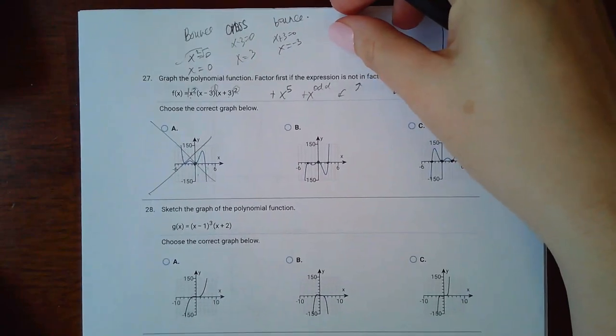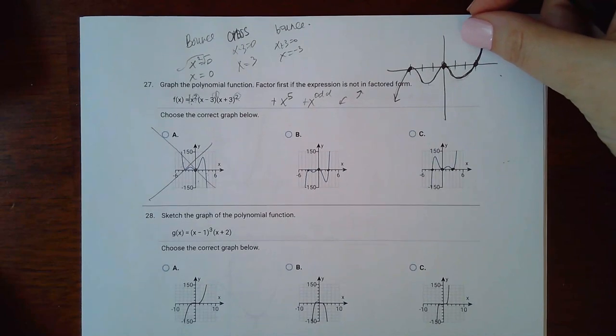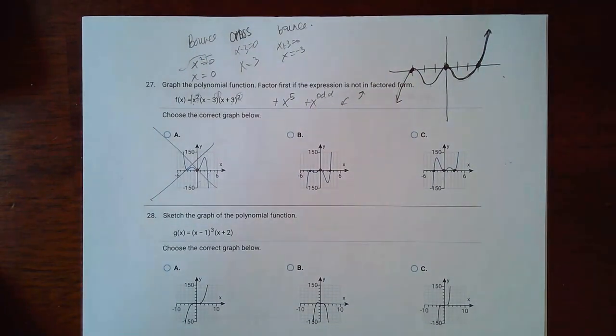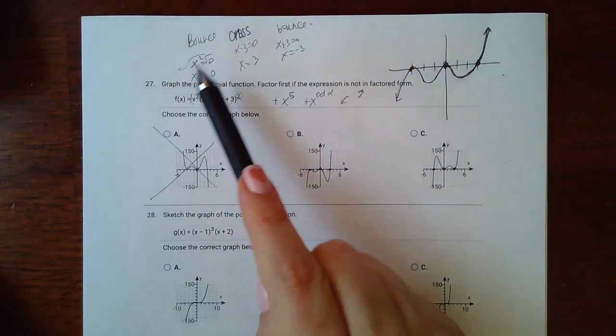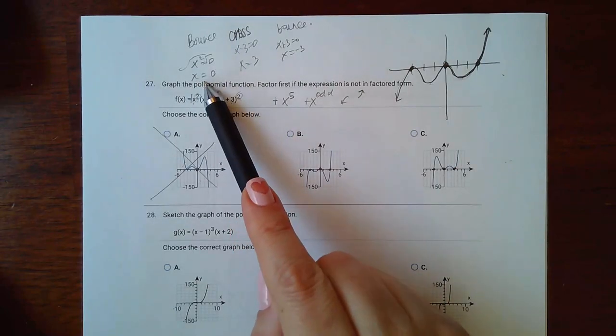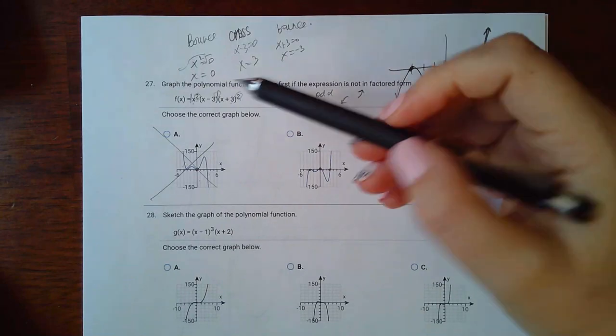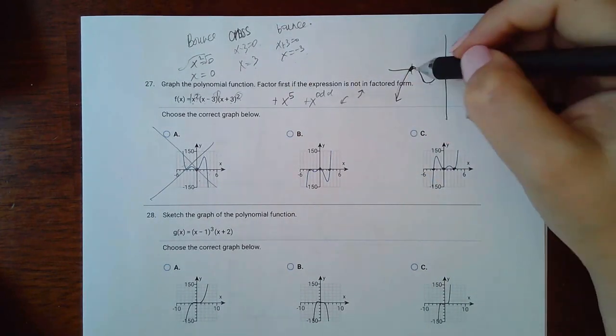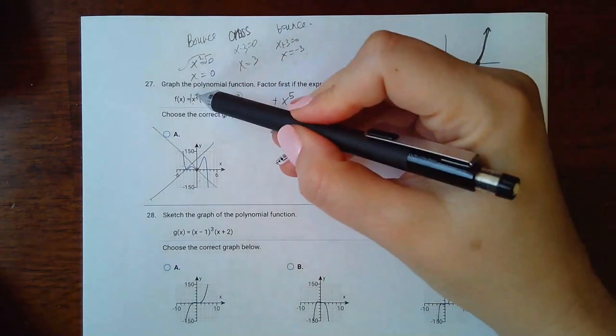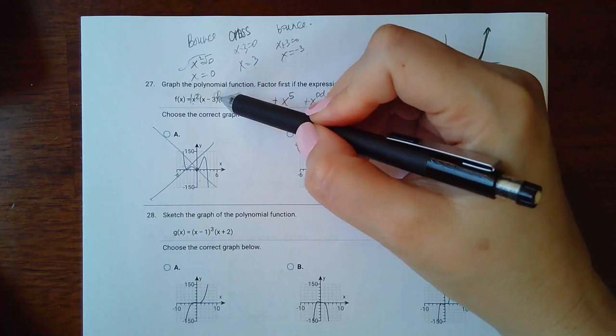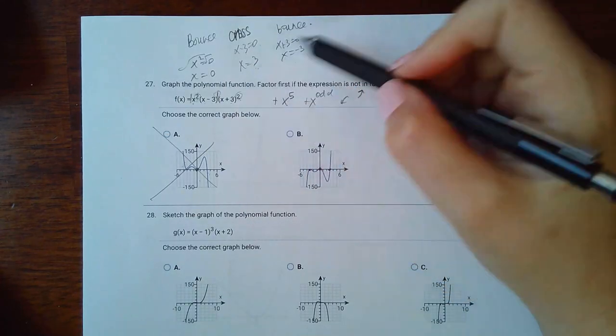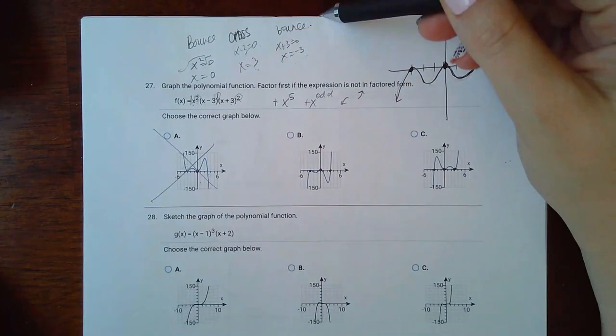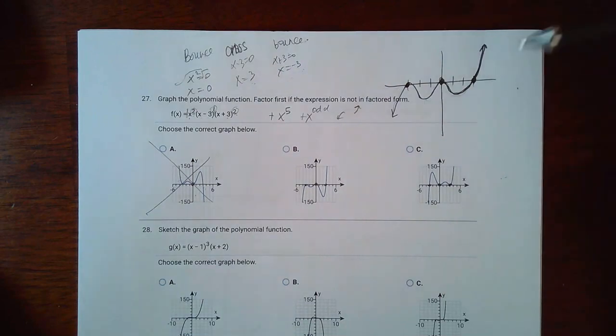Now for number 27 it is multiple choice, and so depending on what the directions are on the test, you may have to explain why you picked what you pick or you may not have to explain. It just depends on the problem on the test. I always like to explain so you see my work there. But if I set x squared equal to 0, I get that x equals 0. So that's one of my x-intercepts. Then x minus 3 equal to 0 gives me the x-intercept of 3. And then x plus 3 equal to 0 gives me the x-intercept of negative 3. Now this exponent of 2 means it's going to bounce at 0. This exponent of 1 means it's going to cross at 3. And this exponent of 2 means it's going to bounce at negative 3.